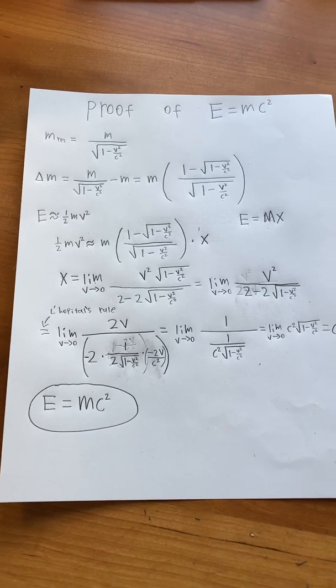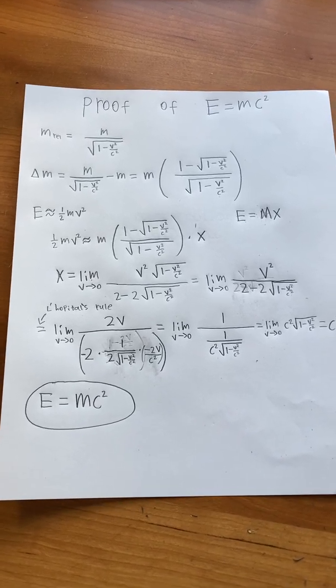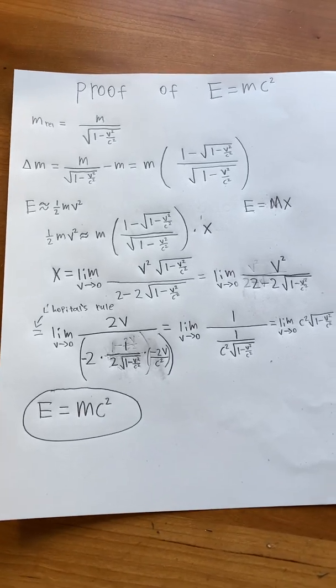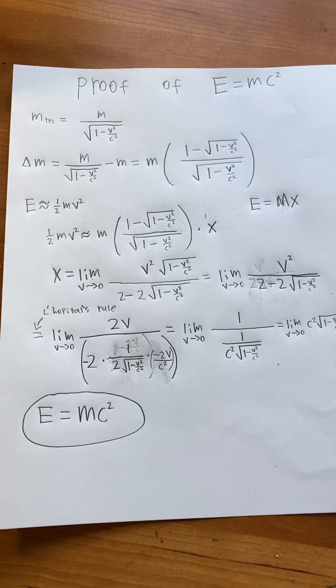Hi guys, in today's video I will be showing you a proof that E equals mc squared. So to start, imagine I have an object of mass m, and I'm going to accelerate it to some speed v.